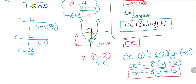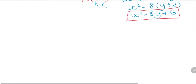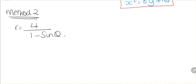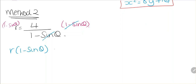We could also do this algebraically — this is Method 2. If r equals 4 divided by (1 minus sine theta), we multiply both sides by (1 minus sine theta). This simplifies to r multiplied by (1 minus sine theta) equals 4.